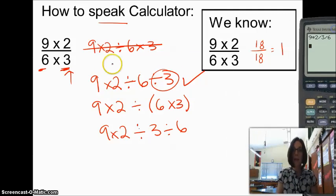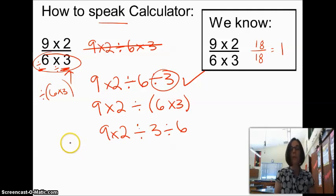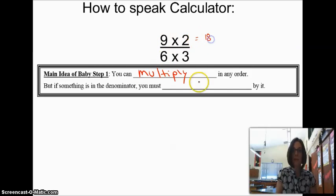So as long as we tell the calculator these numbers are in the denominator by either saying divided by and saying divided by, or by putting the whole thing in parentheses and saying we're going to divide by this whole thing, we are telling the calculator how to perform these operations correctly. So the main idea of this baby step here is that you can multiply in any order you want to. We could call this 9 times 2 or 2 times 9. Either way, it's going to give us the same number.